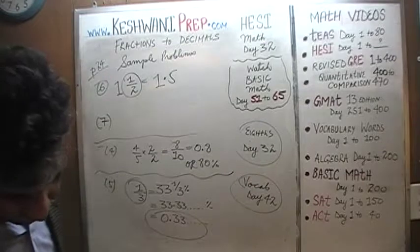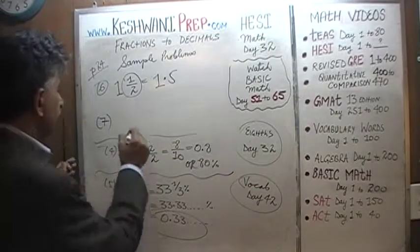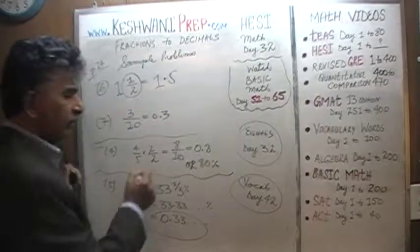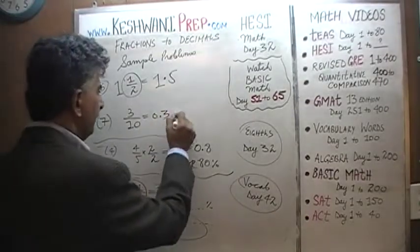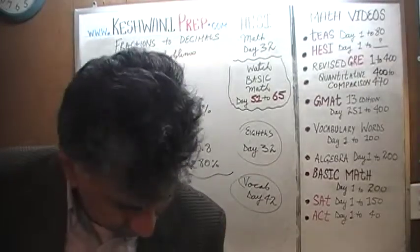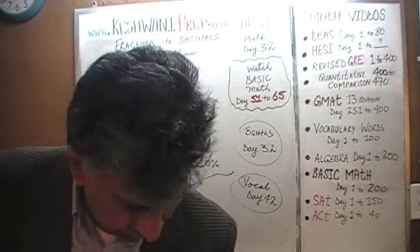Number seven is asking us to convert three-tenths. This is three-tenths. It's just 0.3. If you want it in percentage, this percentage is 30%. Number eight, nine, and ten are a bit complicated. I'm going to do them in a separate video because otherwise it will become too long.